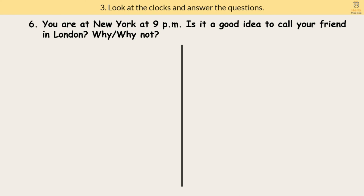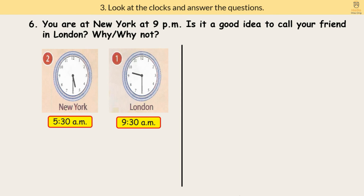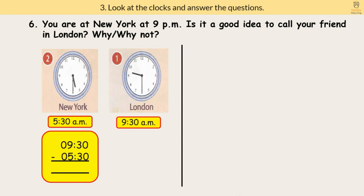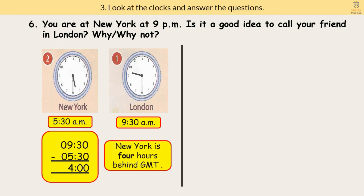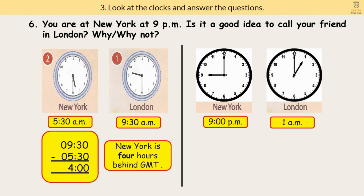Question 6: You are in New York at 9 p.m. Is it a good idea to call your friend in London? Based on question 2, we know New York is behind GMT. When it is 9:30 a.m. in London, the time in New York is 5:30 a.m. — a difference of 4 hours. So New York is 4 hours behind GMT. If you are in New York at 9 p.m., the time in London is 1 a.m. — so it is certainly not a good idea to call your friend.